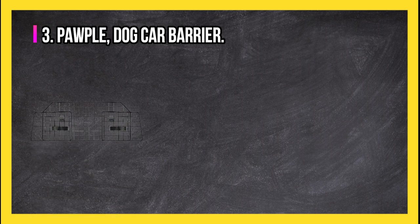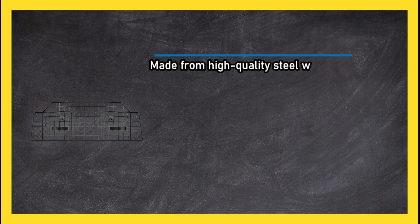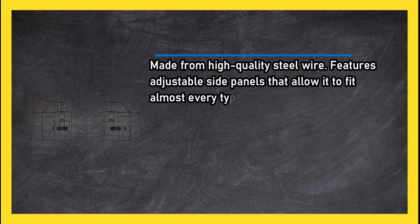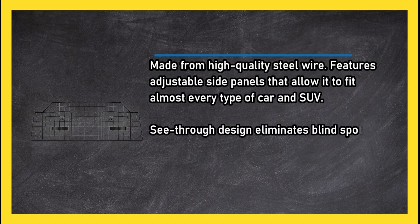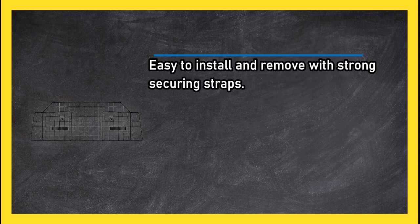At number three, Purple Dog Car Barrier. Made from high quality steel wire, features adjustable side panels that allow it to fit almost every type of car and SUV. See-through design eliminates blind spots, easy to install and remove with strong securing straps.